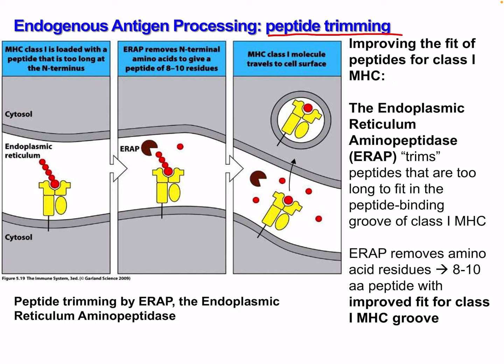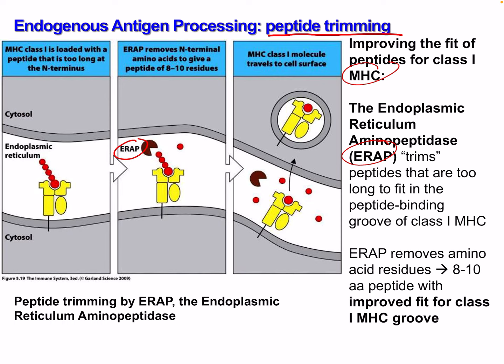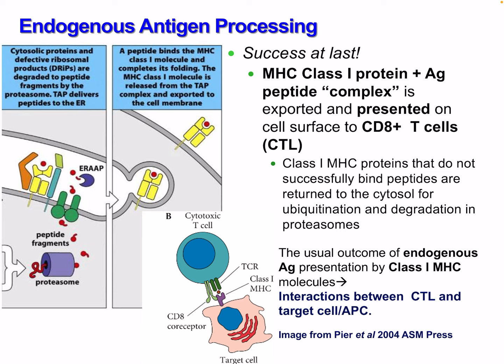Next, peptide trimming: improving the fit of the peptide for class 1 MHC. The endoplasmic reticulum aminopeptidase (ERAP), visible in the figure trimming peptides, trims peptides that are too long to fit in the peptide binding groove of the class 1 MHC. MHC molecules have small binding grooves requiring specific peptide lengths. ERAP removes amino acid sequences, creating eight-to-ten amino acid peptides with improved fit for the class 1 MHC groove — also called the closed groove, as discussed earlier.